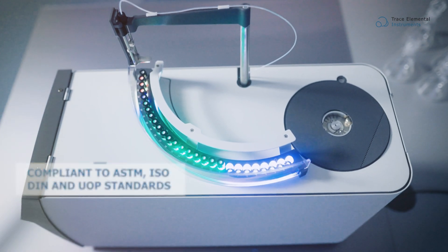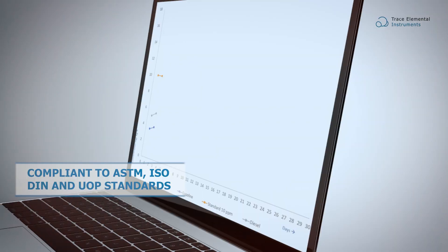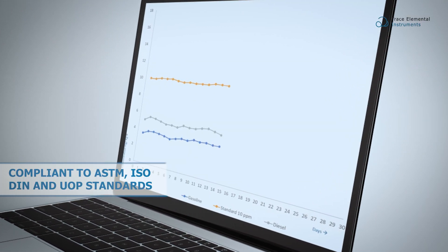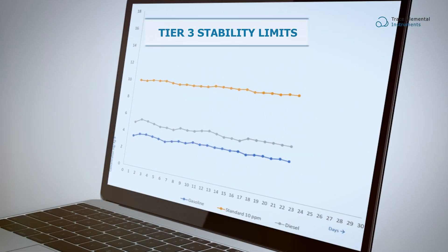The Explorer V analyzer is compliant with all relative ASTM, ISO, DIN, and UOP standards, and reaches stability limits as stated in Tier 3 demands.